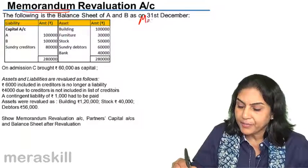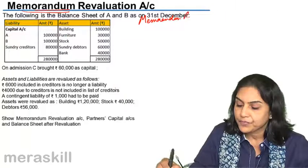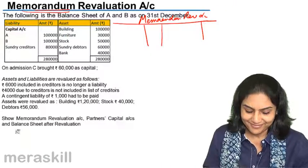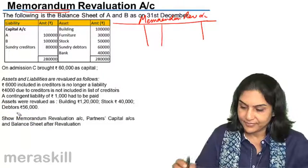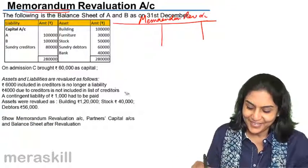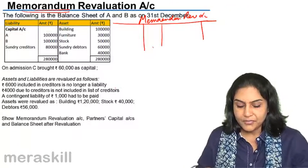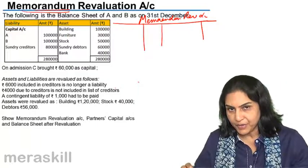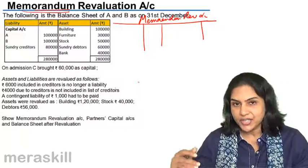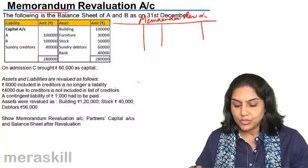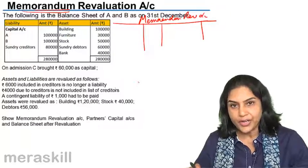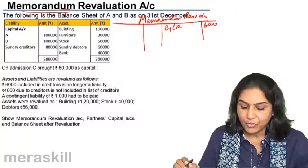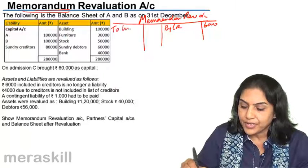We will prepare a memorandum revaluation account. There would be two sections. The first half would be exactly like the revaluation account. For example, 6,000 included in creditors is no longer a liability — so the entry is creditors account debit to memorandum revaluation by 6,000. And 4,000 due to creditors, therefore debit to creditors — just like we did before.